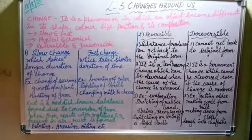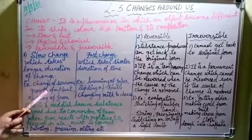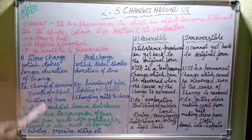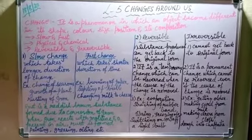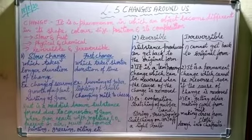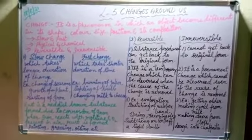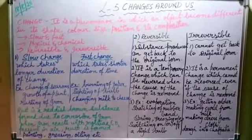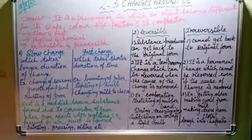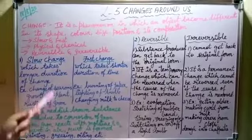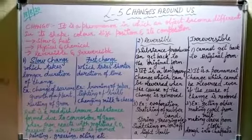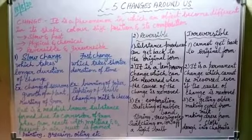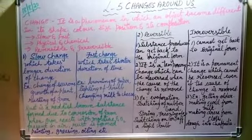Examples of slow change: the change of seasons, which occurs due to the revolution of the Earth around the Sun and takes months; growth of a plant — a seed growing into a plant takes time; and rusting of iron, where a reddish-brown product forms on iron over a longer duration. These are all examples of slow change.